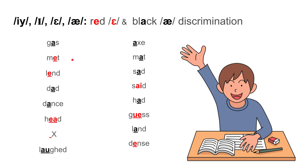Now let's look at the answers: Gas — black E. Met — red E. Land — red E. Dad — black E. Dance — black E. Head — red E. X — red E. Laughed — black E. Axe — black E. Mat — black E. Sad — black E. Said — red E. Guess — red E. Land — E. Dance — E.